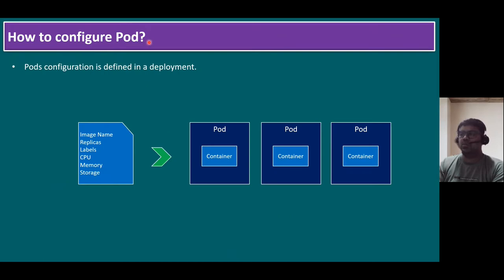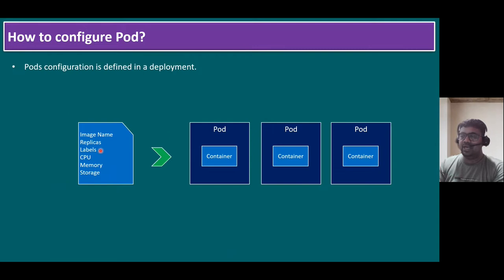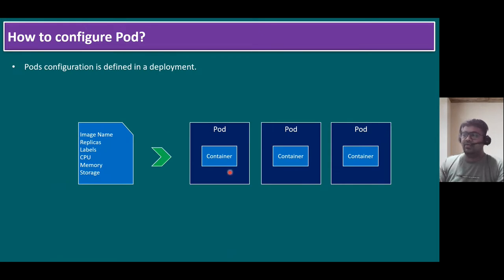How do you configure a pod? Pod configuration is defined in a deployment, similar to a Dockerfile. Within the deployment file, you mention the image name, the number of replicas — for example, if you specify three replicas, three pods will be created — the label name, and the CPU, memory, and storage resource requirements. Based on these details, the pod will be configured within the deployment.